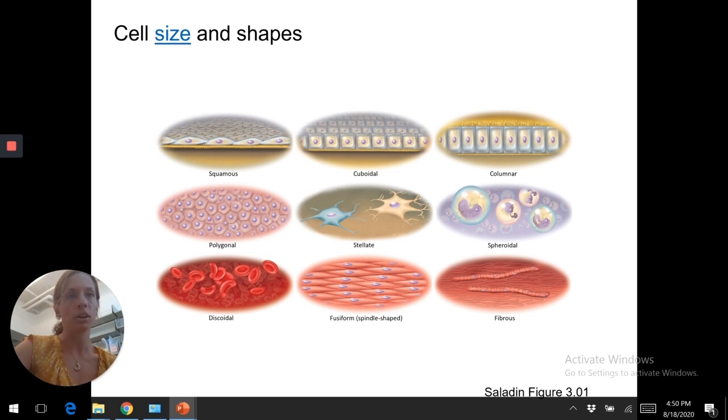So, let's do shape first because it's shown here. These are the various shapes your cells can be. Squamous, cuboidal, and columnar. These you'll see quite a bit with the epithelial tissue types. And you'll see all different other shapes as well.